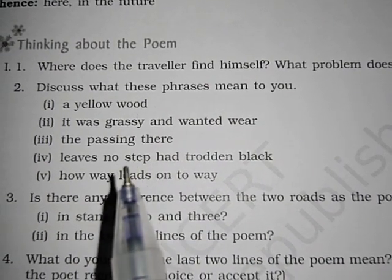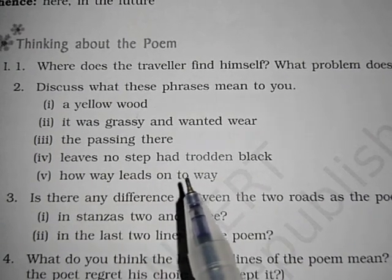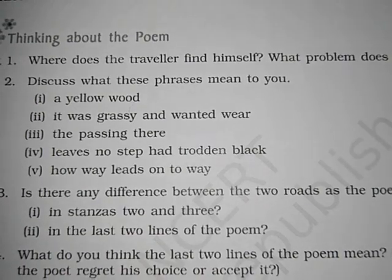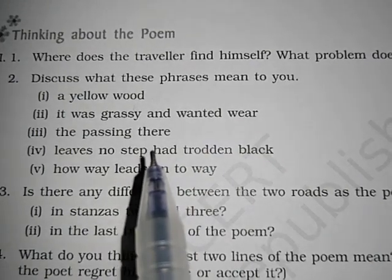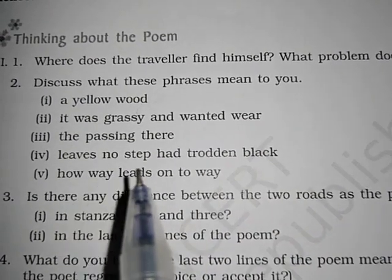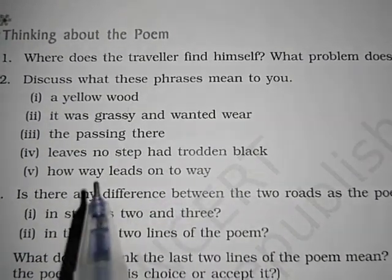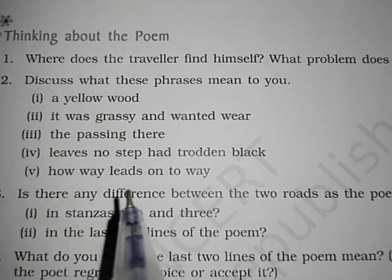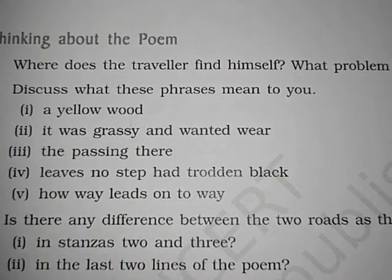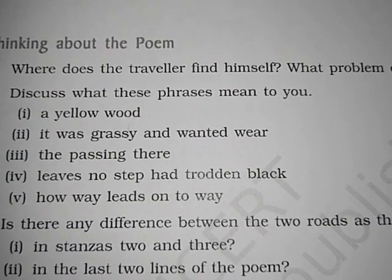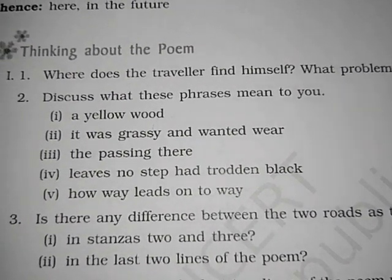'The passing there' means he is traveling through that forest path. 'Leaves no step and trodden black' means there are no marks or signs that someone has traveled on that way. The well-traveled road is full of marks, but this road, which is less traveled by, has no such marks. 'How way leads on to way' means he does not know which destination he is heading to, or where this road ends.